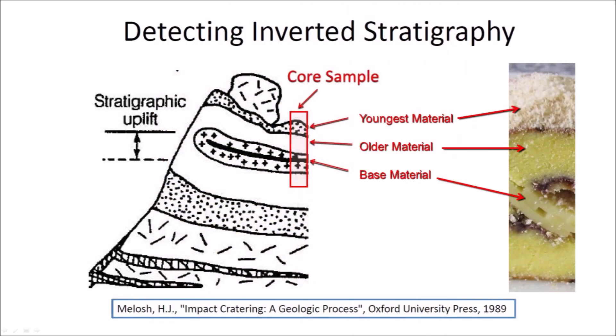Impact cratering displaces material laterally by horizontal compressive forces and ejects debris ballistically to produce stratigraphically uplifted rims around the cavity. The book by Professor Jay Melosh illustrates the inverted stratigraphy of a crater rim. If we obtain a core sample from the rim of an impact crater, we would see the youngest material in the top layer, followed by older material excavated by the projectile from a deeper layer, and going deeper we would find the base material that was the surface of the terrain at the time of the impact.